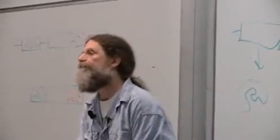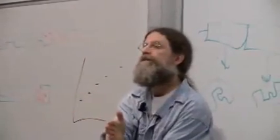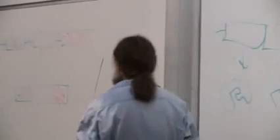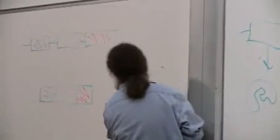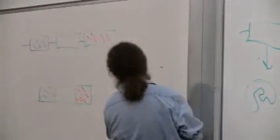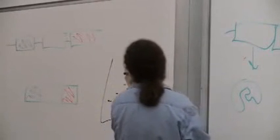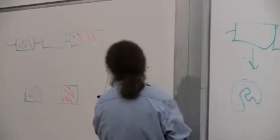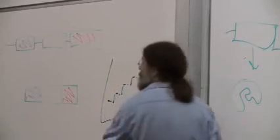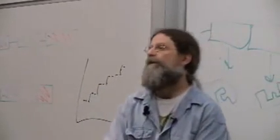And what Gould would notice is, as the field got more and more information, more and more intervening steps, on a lot of these fossil histories, they would start to look more like this. And every now and then, you would see something like this in between. And from that, that began to suggest to him this model of punctuated equilibrium.